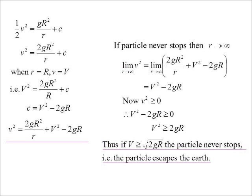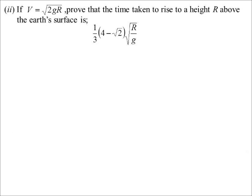As I say, it was a very old question. These days, it would be worded a lot differently to come up with this sort of answer. But it's using the idea of limits. We're now going to give it that escape velocity. We're going to assume v is indeed the square root of 2gR. We're going to prove that the time taken to rise to a height of capital R above the Earth's surface is this beautiful expression.